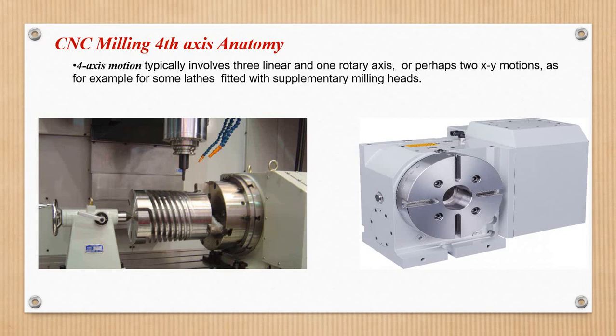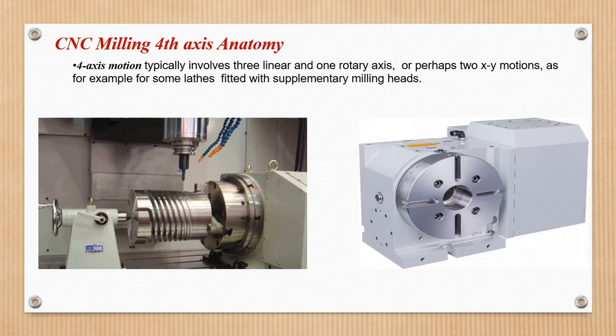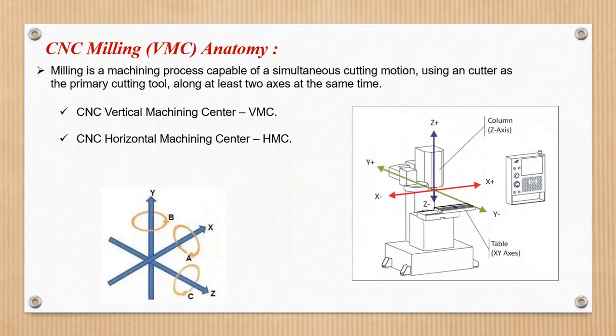In VMC and HMC, here is the X axis, Y axis, and Z axis — so here is the movement. Here is the cutting tool. So the rotary axis in X is called A, the rotary axis in Y is called B, and the rotary axis in Z is called C.